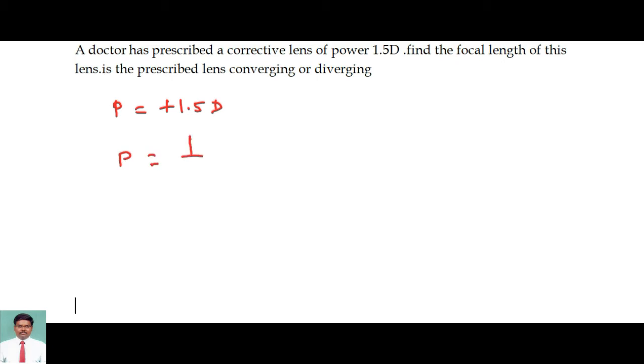The formula is power equals reciprocal of the focal length f, so f can be written as 1 by the power P. That is equal to 1 by 1.5, which equals 0.67 meters. If you convert it into centimeters...